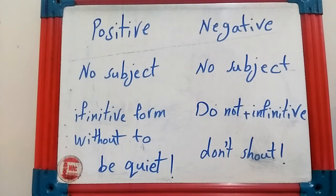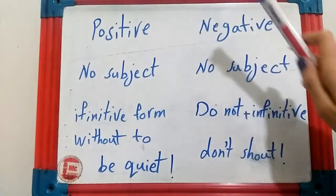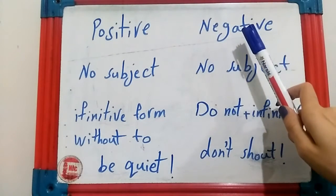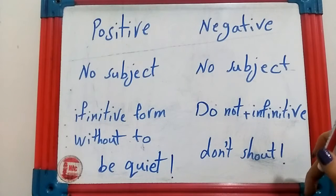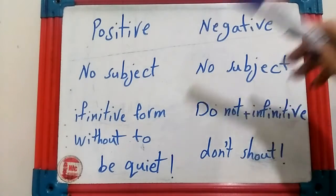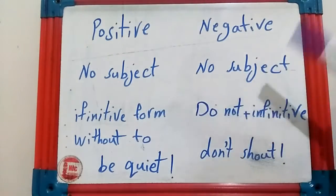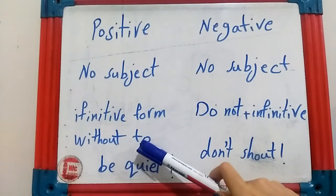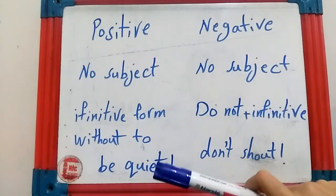We can divide imperative sentences into positive and negative. What is the structure in positive and negative? Both of them — we should not write a subject in our sentences. In imperative sentences, there is no subject. Both positive and negative have no subject.